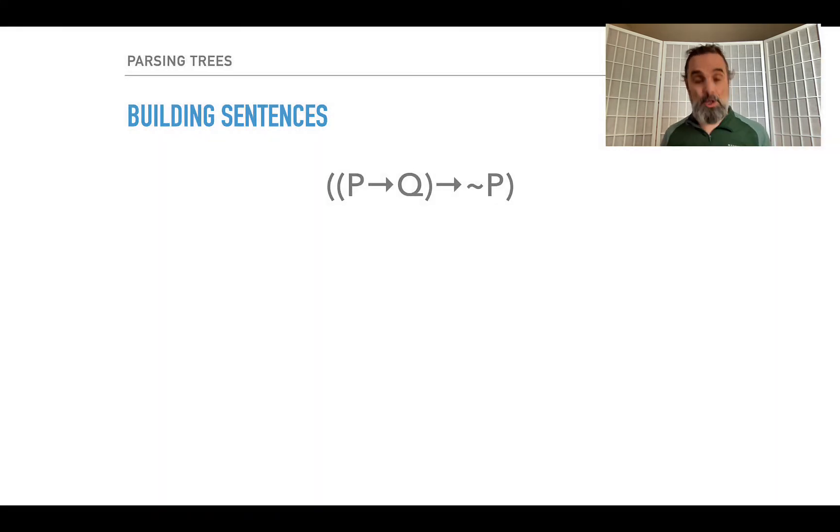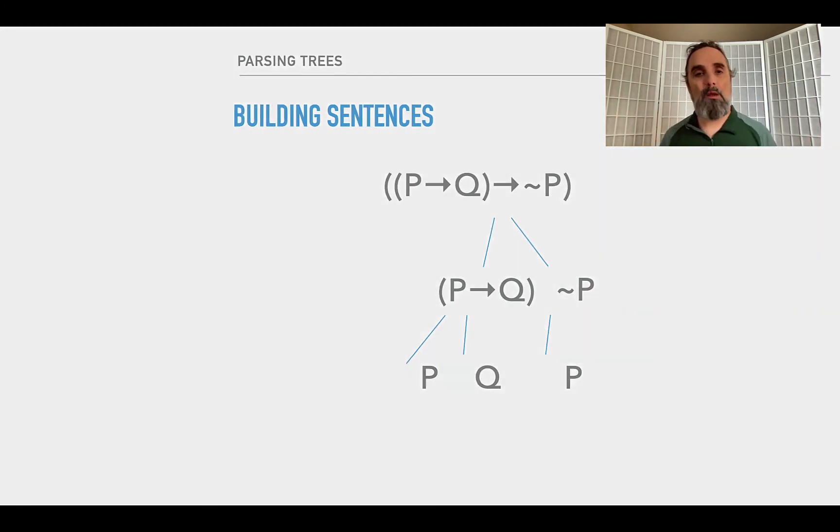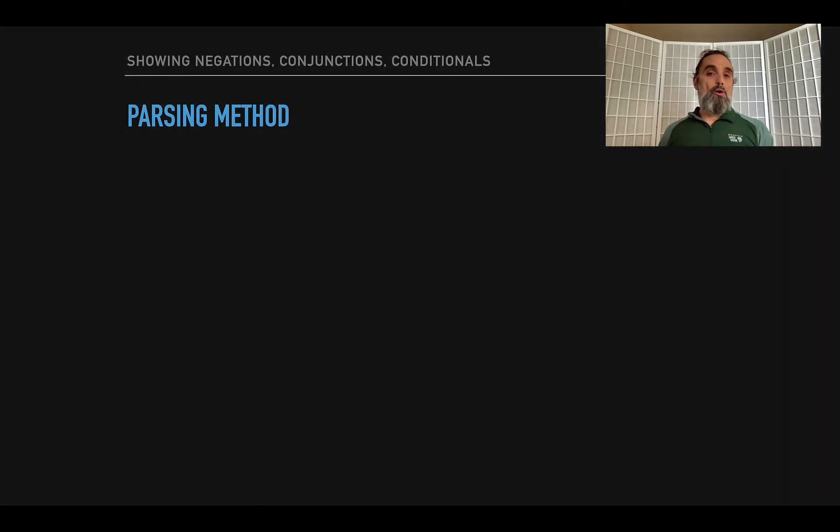So when you're given a sentence, you can break it down, right? You break it down into the P or Q and the not P, and then you break the P or Q down into the P and the Q, and you break the not P down into the P. And you say, oh, now I see. I started with P or Q arrow not P with the parentheses, and now I've broken it down and I see how it was built.